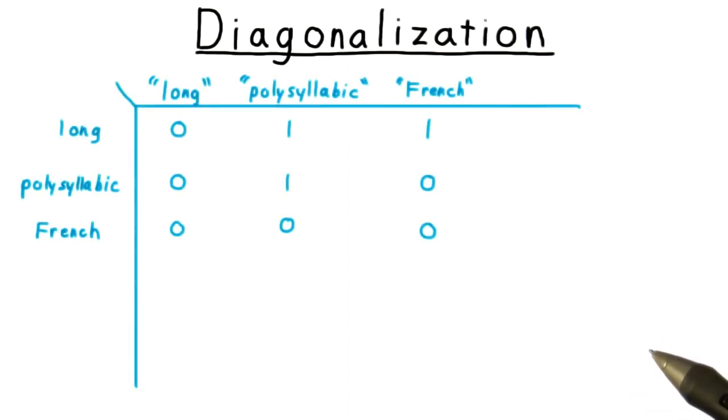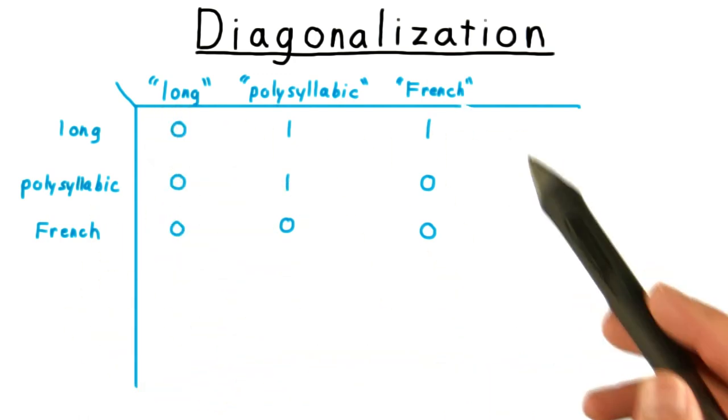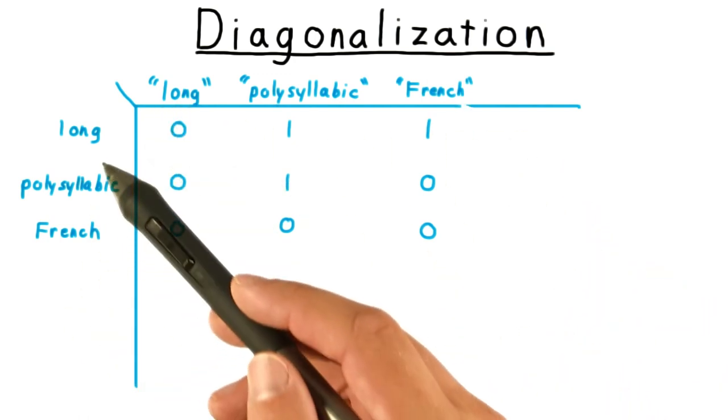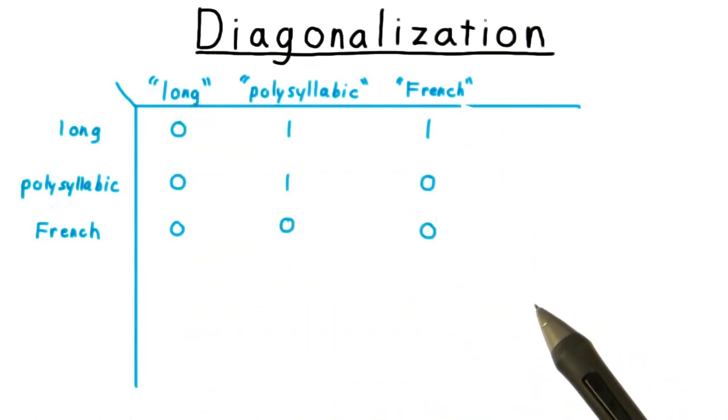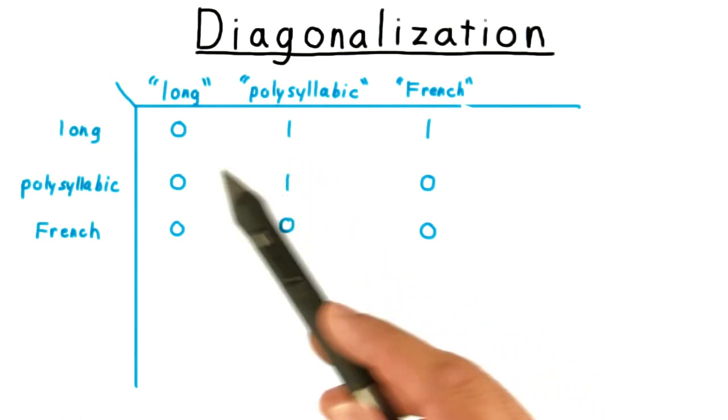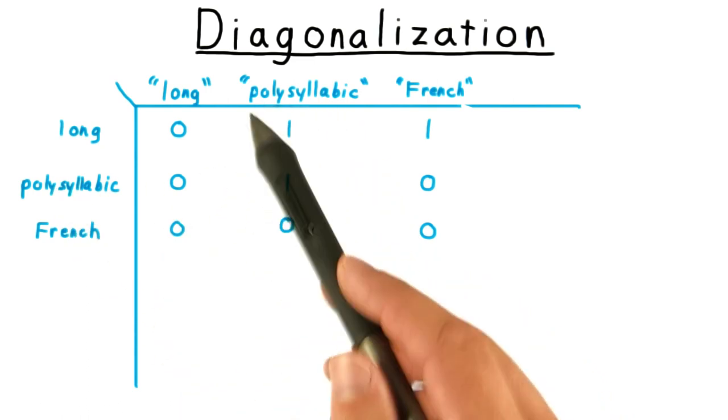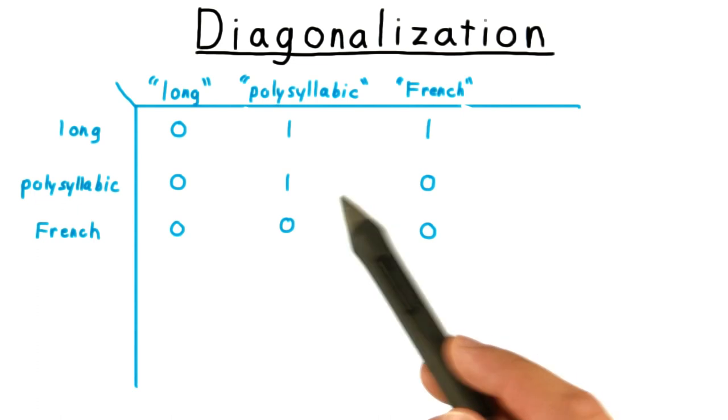Here I've created a table with English adjectives, both as the rows and as the columns. Consider the row to be the word itself, and the column to be the string representation of the word. For each entry, I've written a one if the row adjective applies to the column representation of the word.